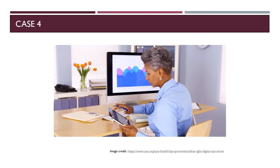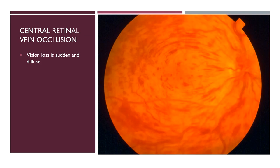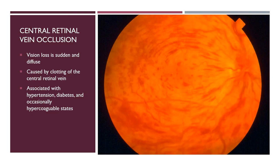Case four: a 65-year-old woman with controlled hypertension and diabetes complains of sudden onset vision loss. Central retinal vein occlusion is on the differential. The vision loss is sudden and diffuse, caused by clotting of the central retinal vein, and is associated with hypertension, diabetes, and occasionally hypercoagulable states. Direct ophthalmoscopy shows diffuse hemorrhages throughout the retina, tortuosity of the vasculature emanating from the optic disc, and blurring of the optic disc margins. Vision loss is caused by ischemia to the retina as well as the hemorrhages themselves.